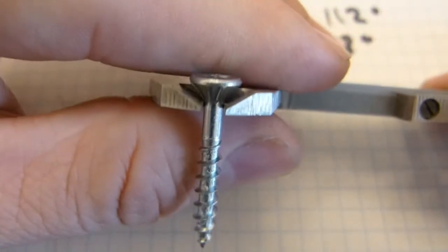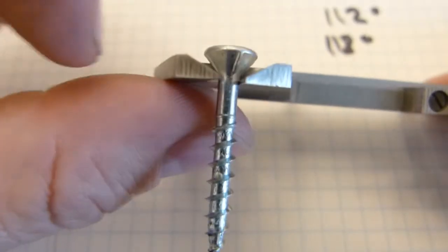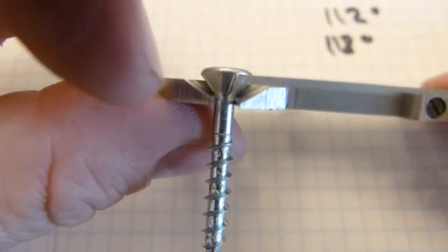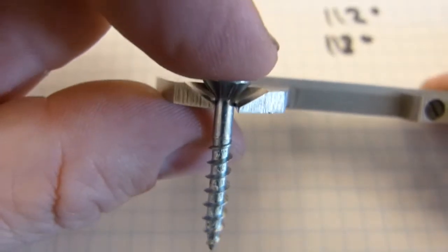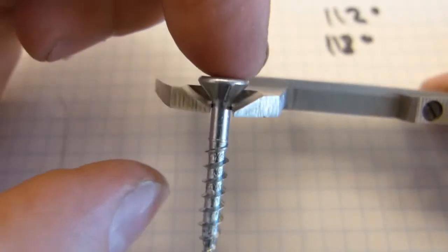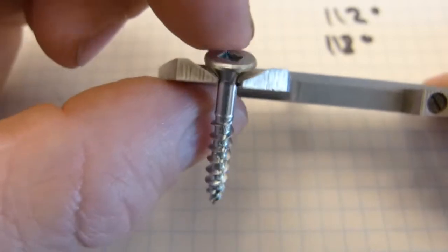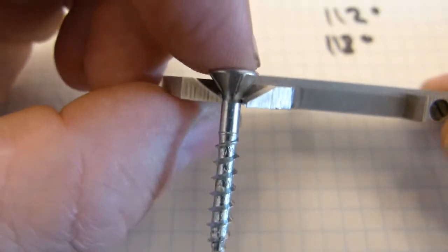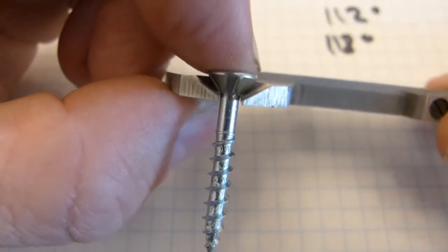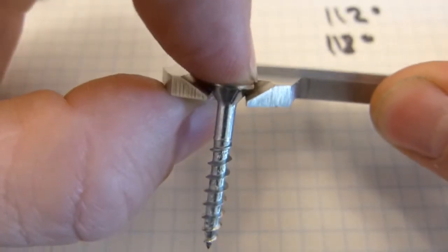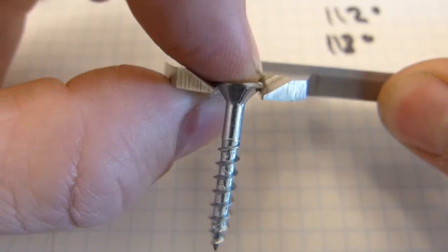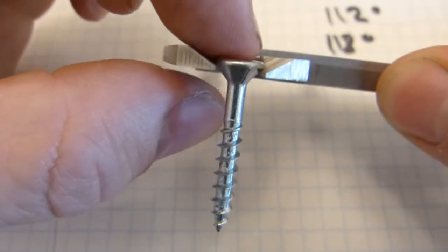Now if the two bevels match this way, that the bevel angle on the caliper jaws is wider than the bevel angle on the screw head, then what's going to happen as you drive this screw forward is you're going to split the wood with it, because you're forcing it in.